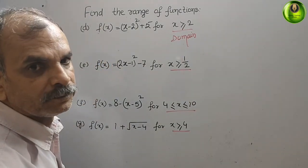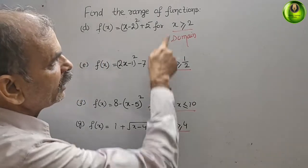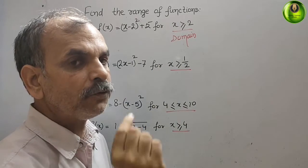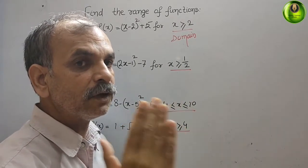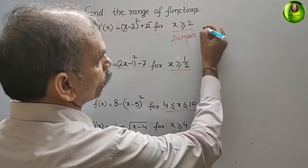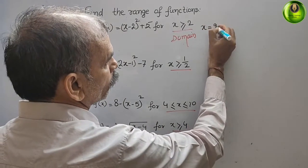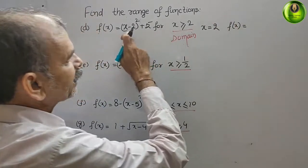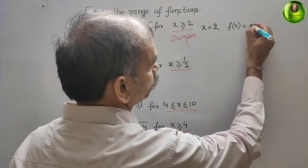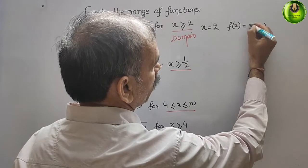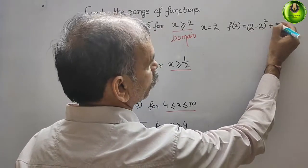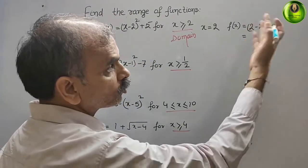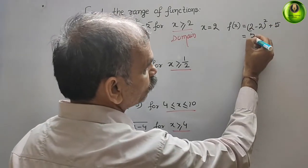Now we will find the range. You can see they have given x ≥ 2, so first we will take x = 2. Now f(x) = (2-2)² + 5. That is 0 squared plus 5, so 2 minus 2 is 0, 0 squared is 0, which means f(2) = 5.